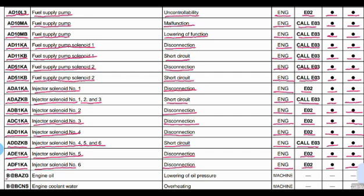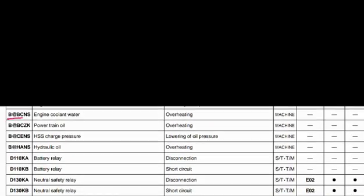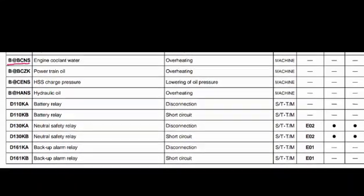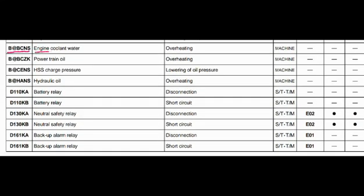Code BAZG: the part is engine oil and the problem is lowering of oil pressure. Related to the engine controller. No action code, no lamp blinking, no buzzer beeping. Code BCNS: the part is engine coolant water and the problem is overheating. Related to the machine controller system.